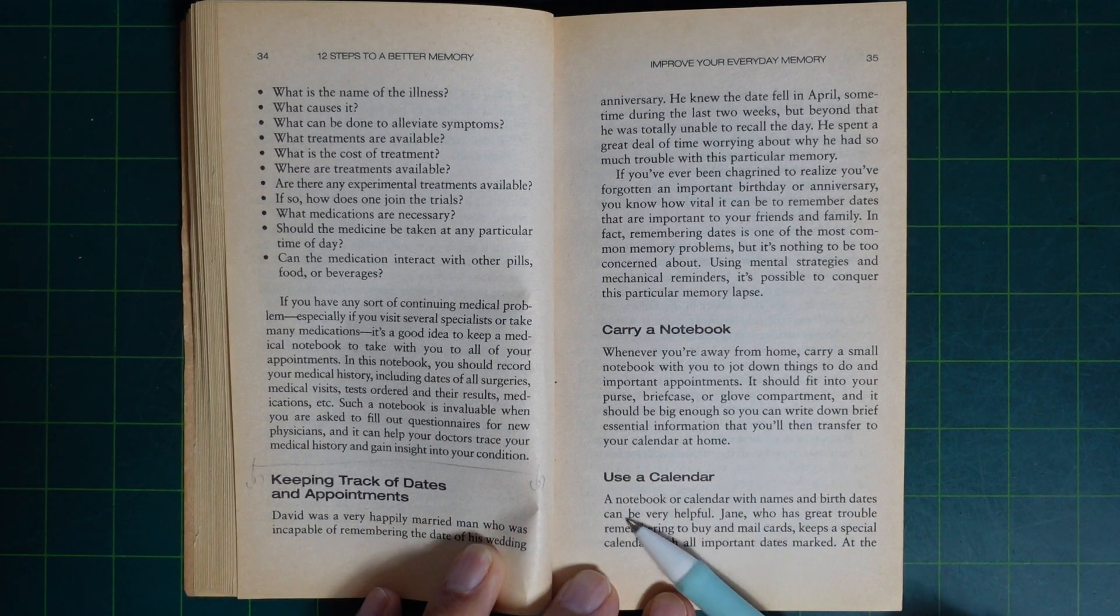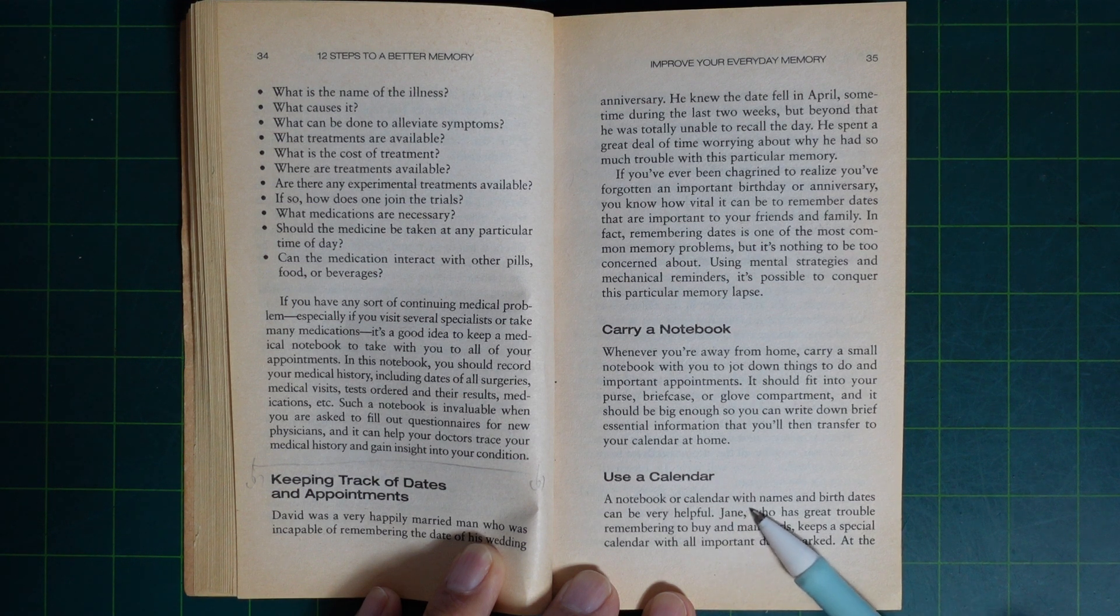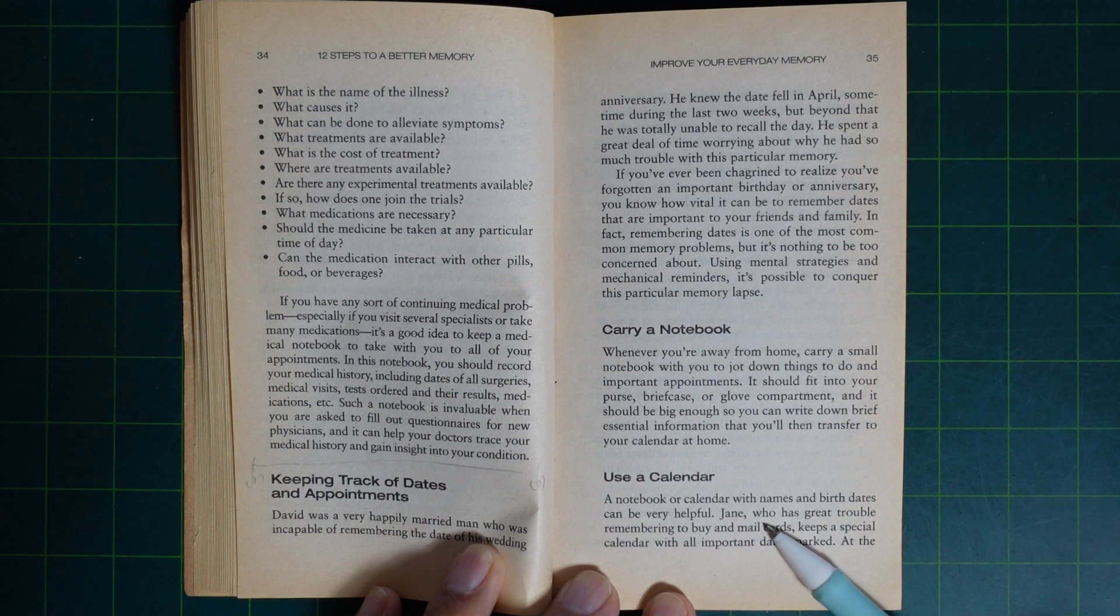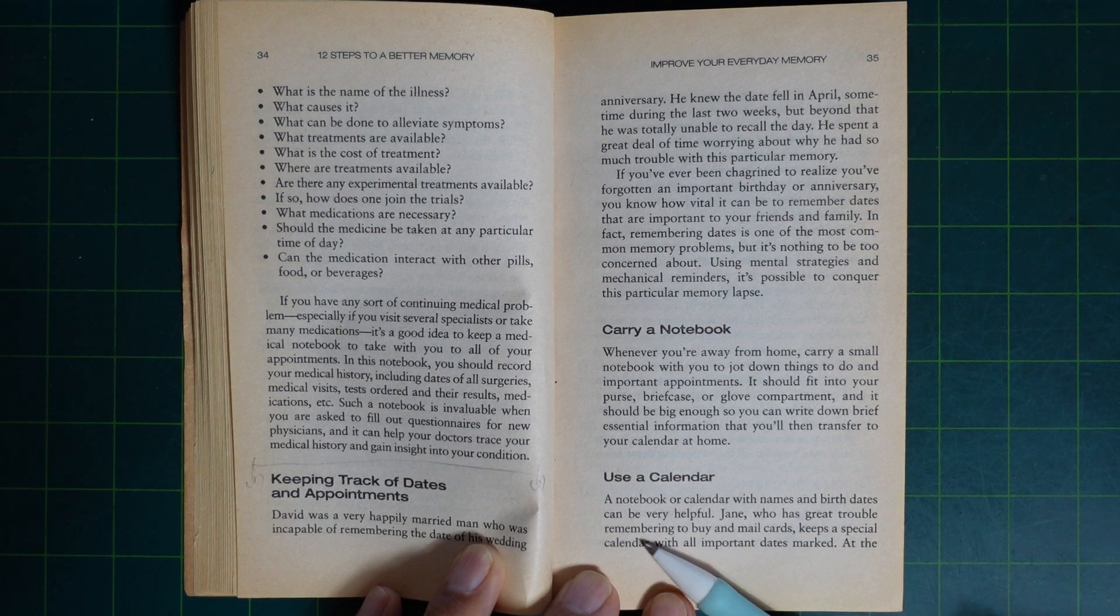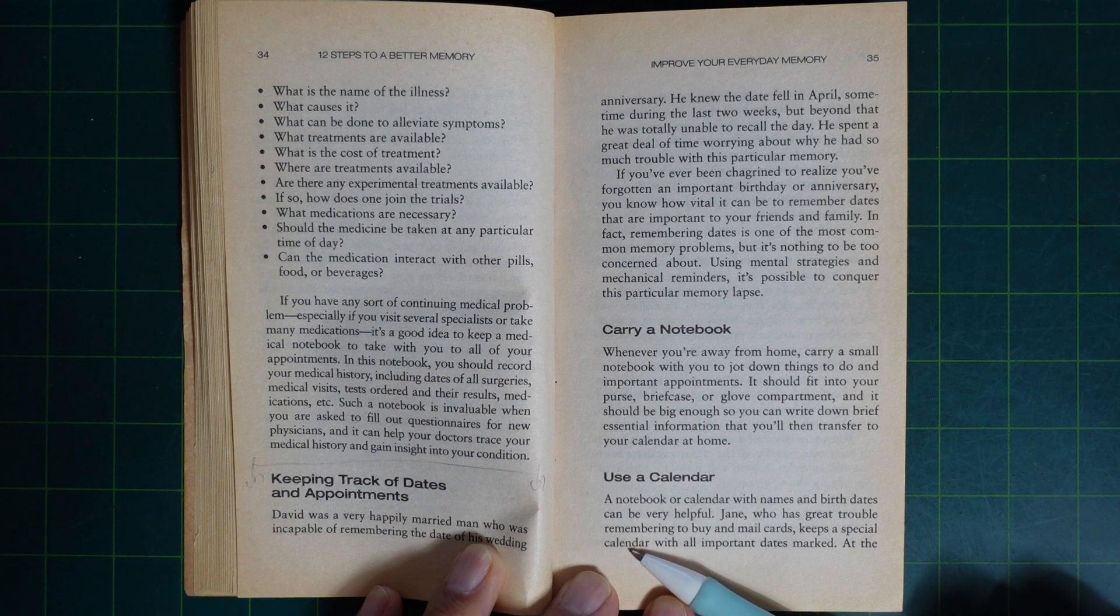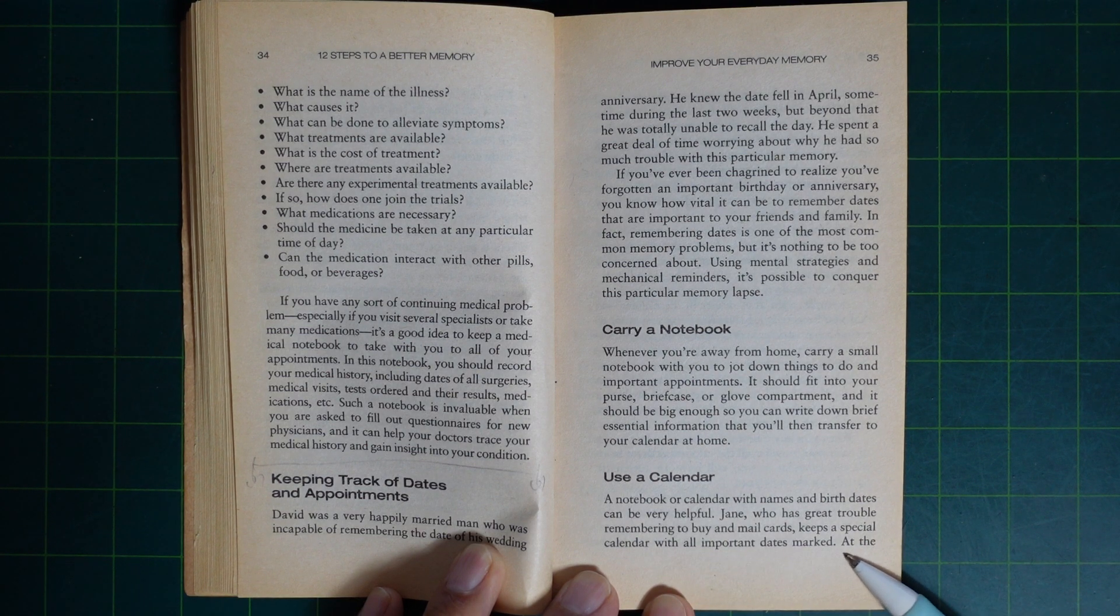Use a calendar. A notebook or calendar with names and birth dates can be very helpful. Jane, who has great trouble remembering to buy and mail cards, keeps a special calendar with all important dates marked.